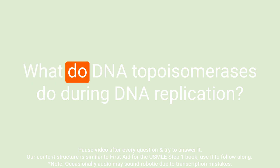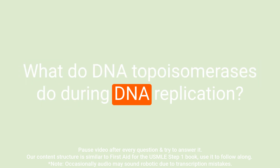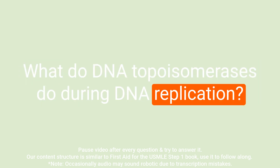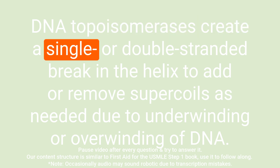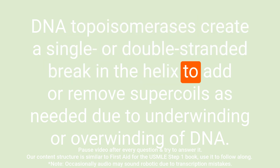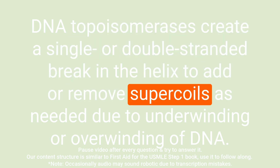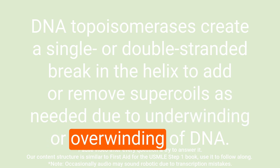Question: What do DNA topoisomerases do during DNA replication? Answer: DNA topoisomerases create a single or double-stranded break in the helix to add or remove supercoils as needed due to underwinding or overwinding of DNA.